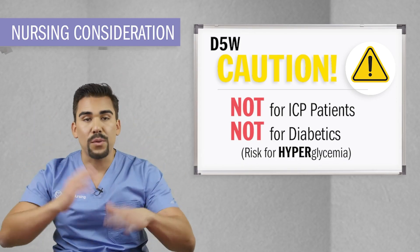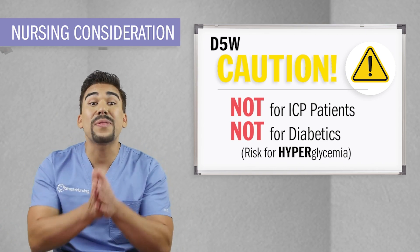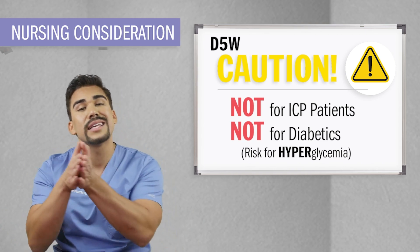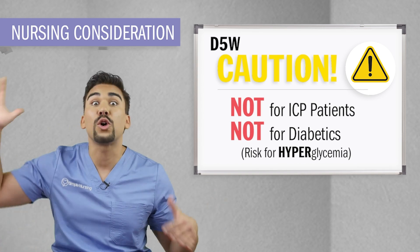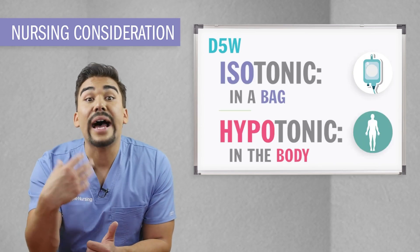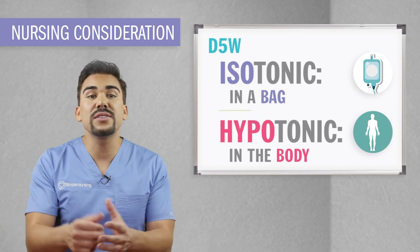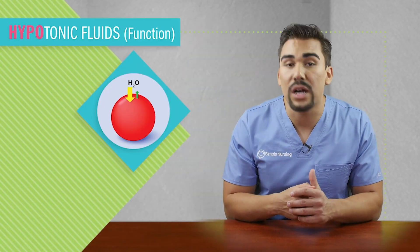Caution — D5W is a very unique solution and may be both isotonic as well as hypotonic, but never hypertonic. D5W is isotonic in the bag and hypotonic in the body. Sugar is the big culprit here. Inside the bag, the sugar is thick and floating around. But once inside the body, the sugar is eaten up by all the cells, and all that's left is good old hypotonic fluid.